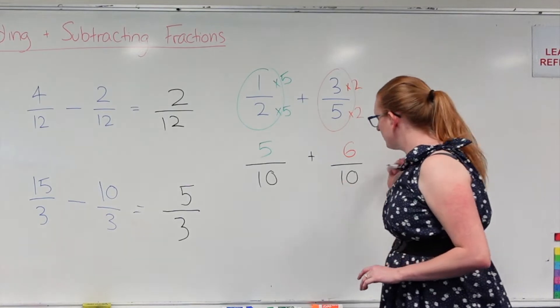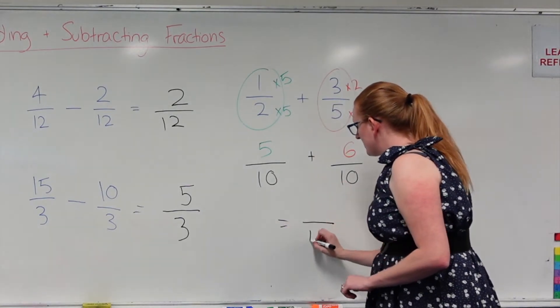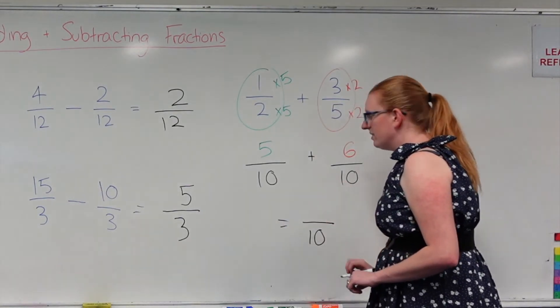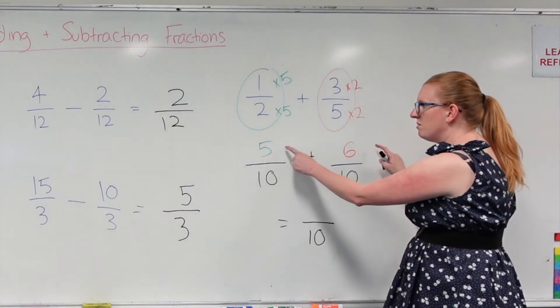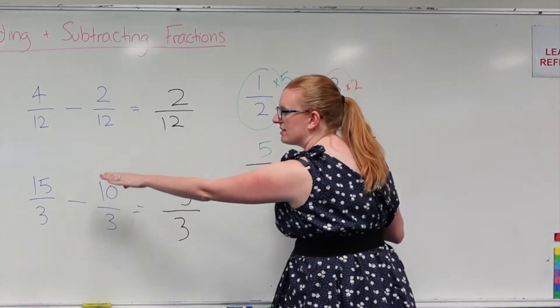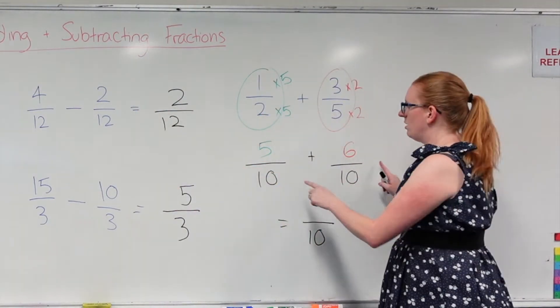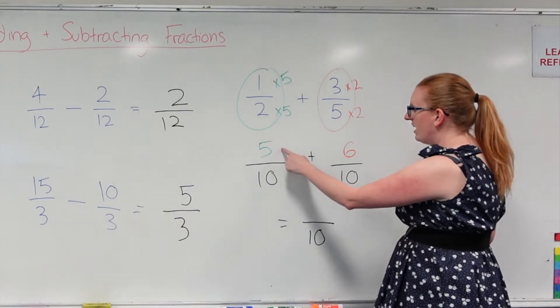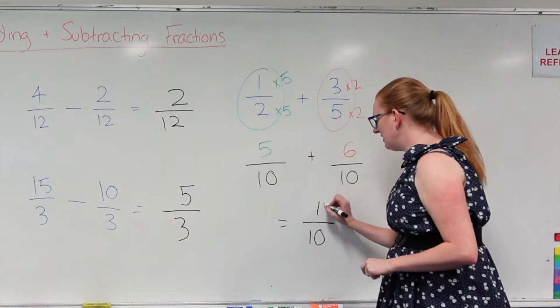Because I'm running out of space I'll write it underneath. So I know my answer is going to be over 10. All I'm doing is adding my numerators — just like with all the other examples, I'm only working with the numbers on the top. So 5 plus 6 gives me 11.